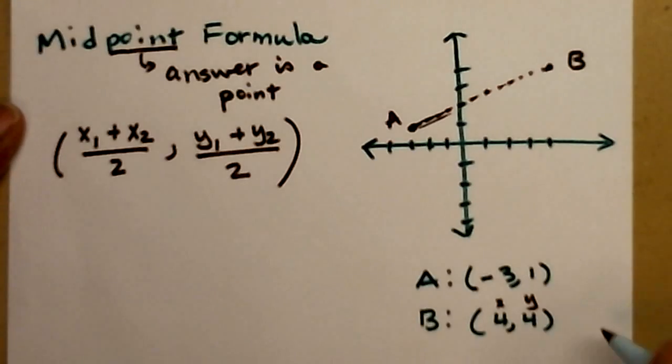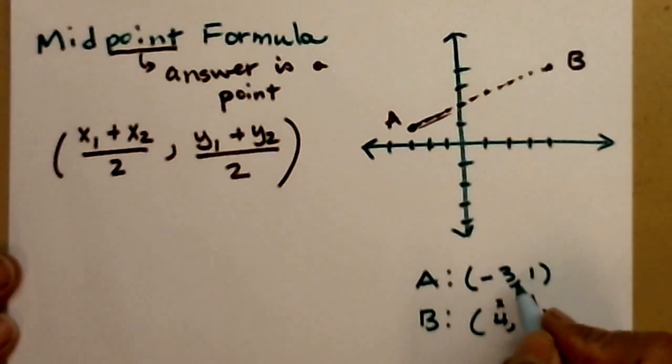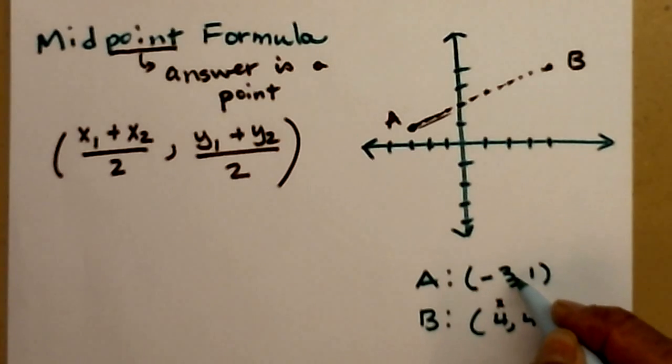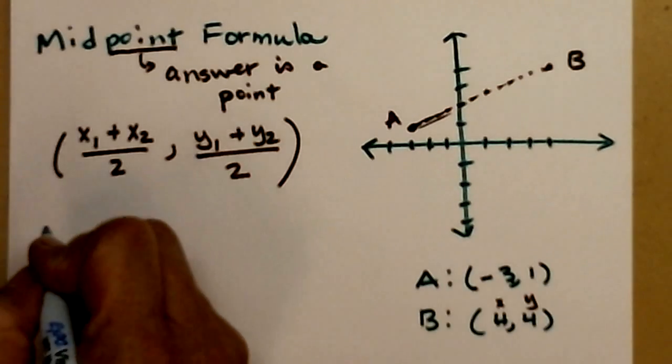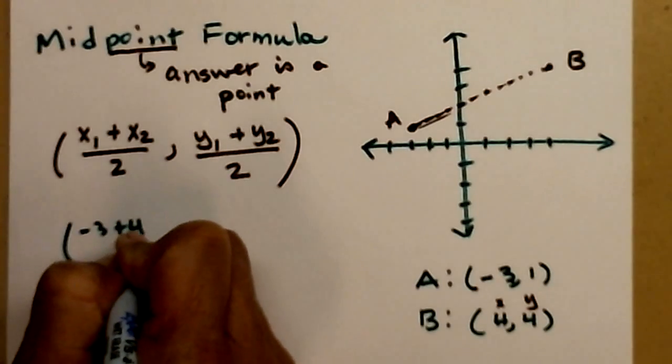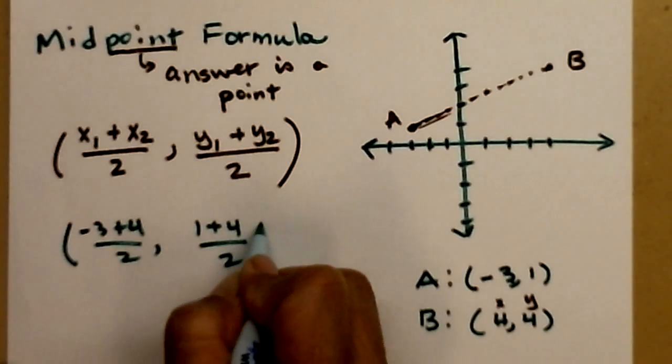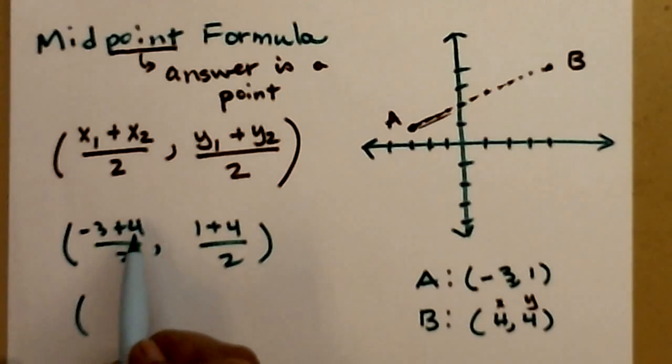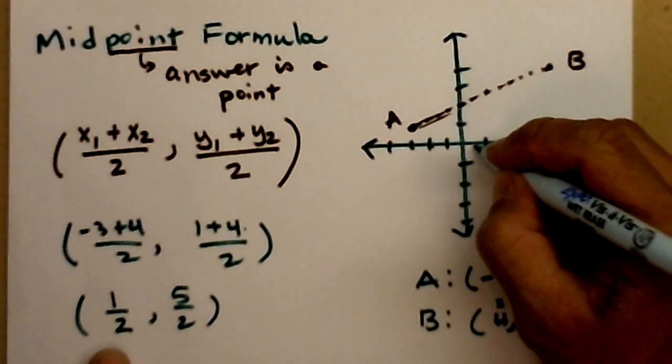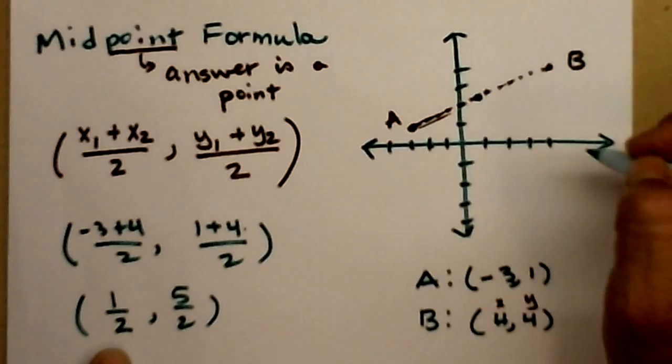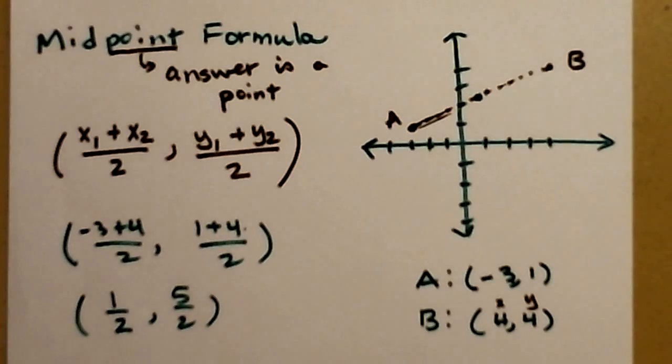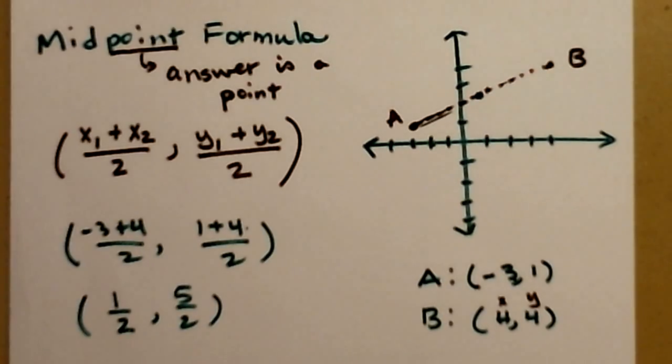Add your two y values and divide by 2. So for this particular example, you'll see that we have, so my x sub 1. It doesn't matter who's 1 and 2, right? Just be consistent. So this x plus this x. So I have negative 3 plus 4 all over 2. And for my y's, I have 1 plus 4 over 2. So let's simplify those fractions. Negative 3 plus 4 is positive 1. So positive 1 half and 5 halves. So 0.5 and 2.5. That's pretty darn close. Okay, so that's the midpoint formula. And it's a point and it's the average. So you can remember that.